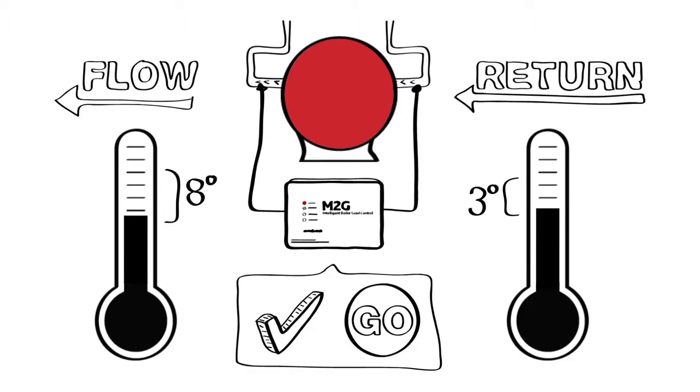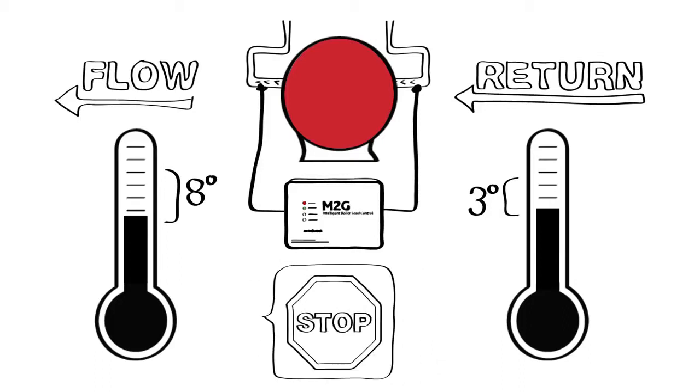the M2G recognizes this as natural heat loss and not a real demand. It won't allow the boiler to fire unless the flow drops 8 degrees or the return drops 3 degrees below the initial snapshot reading. The maximum period M2G can prevent the boiler firing is 15 minutes.